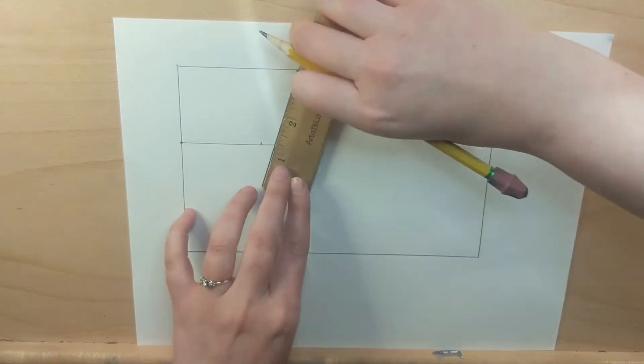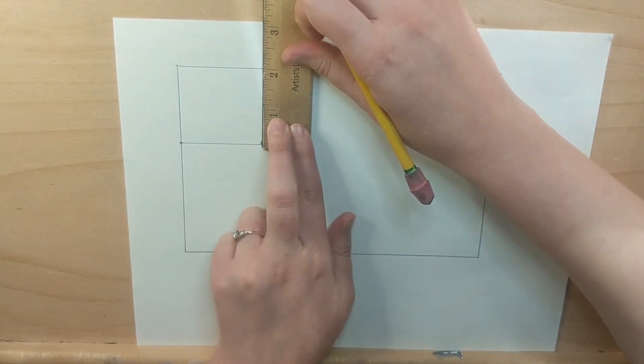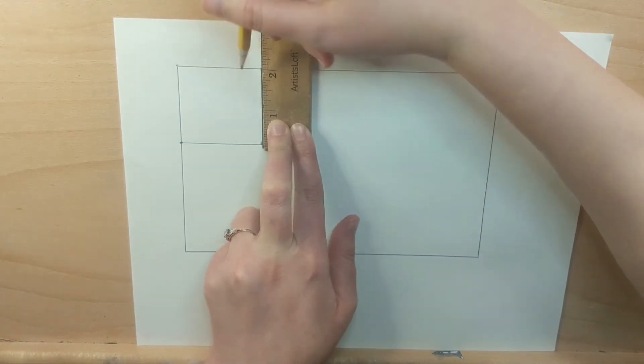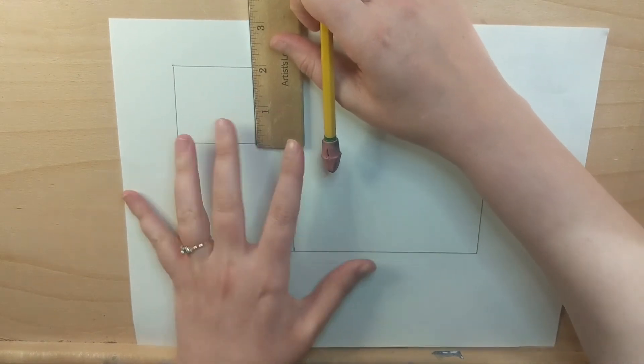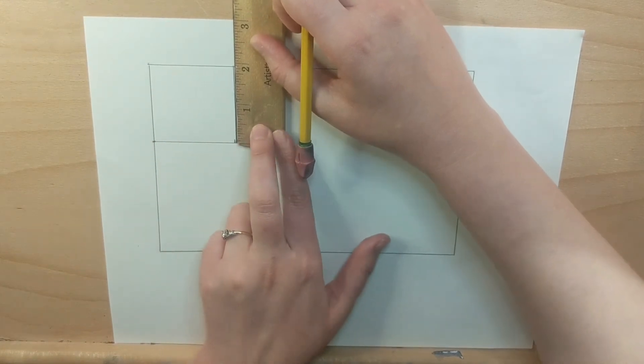Now I have one tiny rectangle left. I'm going to divide that rectangle in half to create two 1 inch squares, so I'm just going to make a mark at 1 inch so I can divide that last little rectangle in half.